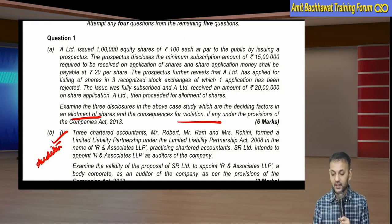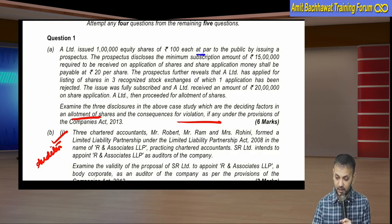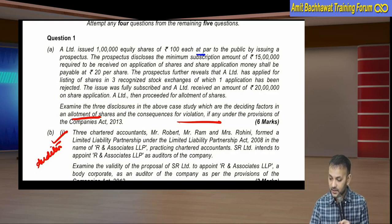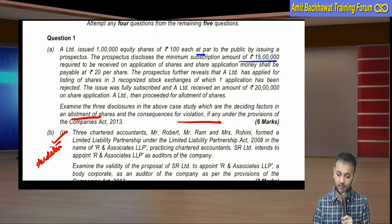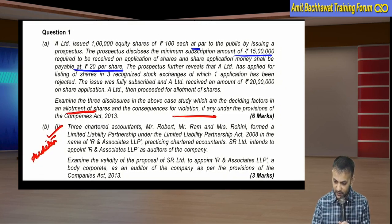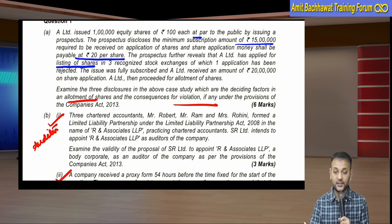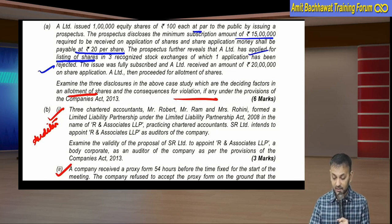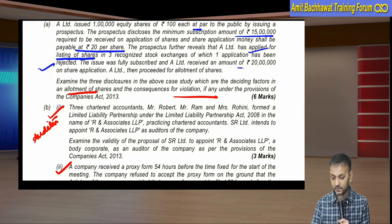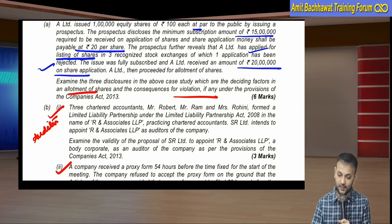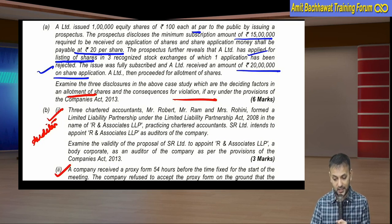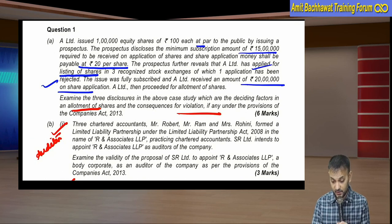A Limited issued 1 lakh equity shares of rupees 100 each at par face value to the public by issuing a prospectus. The prospectus discloses the minimum subscription amount of 15 lakh rupees required to be received during application of shares, and the share application money shall be payable at 20 per share. The prospectus further reveals that A Limited applied for listing of shares in 3 recognized stock exchanges, of which one application has been rejected. The issue was fully subscribed, A Limited received the application money, and it proceeded for allotment of shares. Examine the 3 disclosures in the above case study.